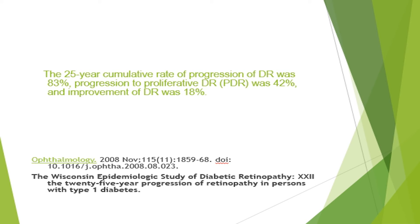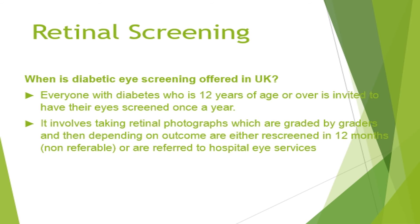The Wisconsin Epidemiological Study of Diabetic Retinopathy showed the rate of progression is very high — in about 83% of people the retinopathy progresses over time, and in about 40% it progresses to proliferative diabetic retinopathy, which puts the patient at risk of blindness. Encouragingly, about 18% of people notice an improvement in their retinopathy with good control of diabetes and other risk factors.